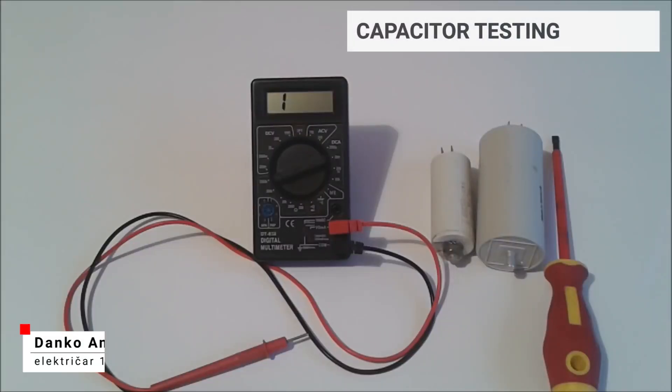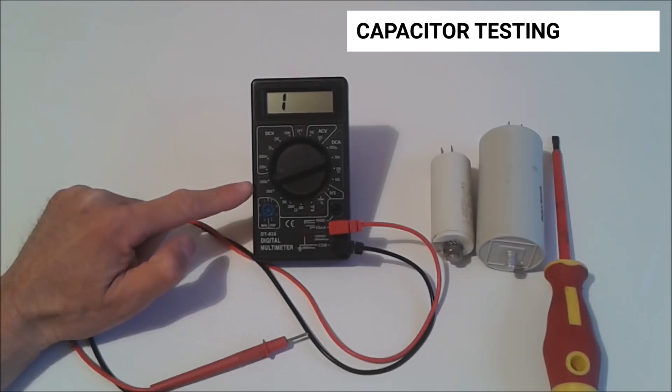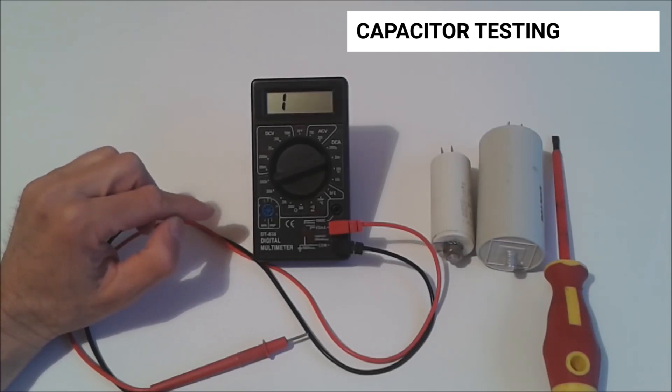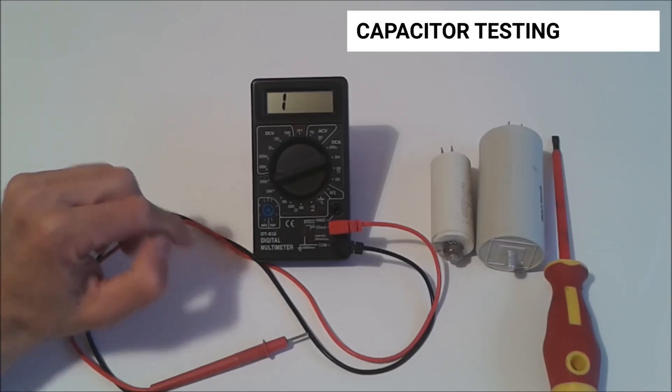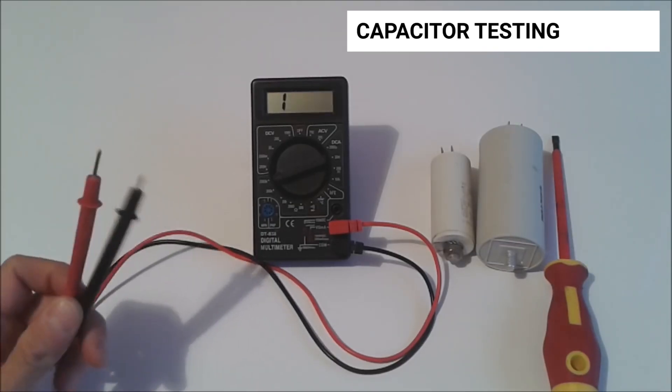Even using an ordinary multimeter that does not have the ability to measure capacitance, we can test whether a capacitor is operating properly. We will perform the test by placing the measurement in the area for measuring resistance, choosing a range of about 1 to 2 megaohms, and connecting the probes to the capacitor terminal.